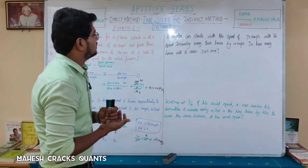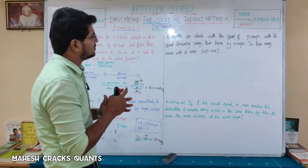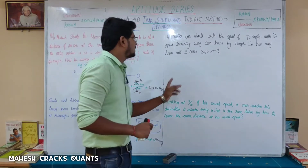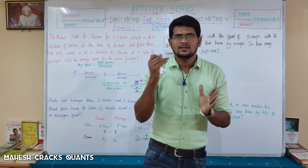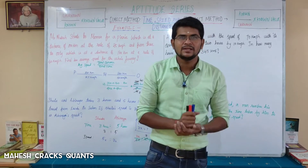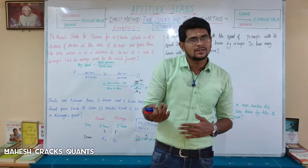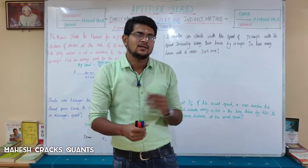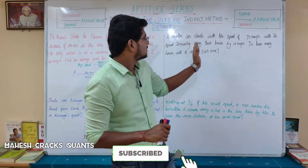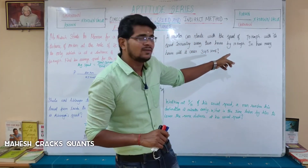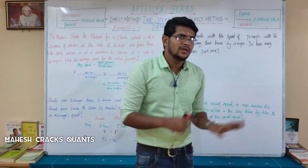Next question. A motor car starts with a speed of 70 km per hour, with its speed increasing every 2 hours by 10 km per hour. In how many hours will it cover 345 km? In the first 2 hours at 70 km/h, it covers 140 km.